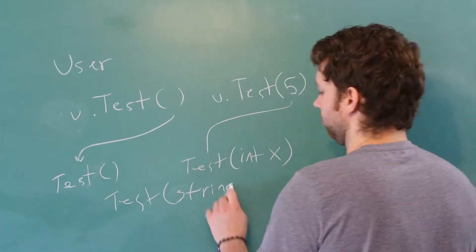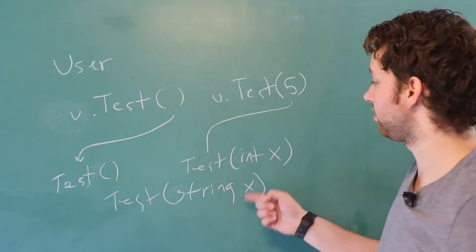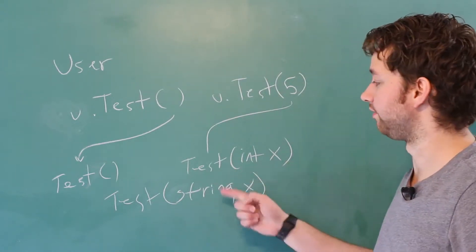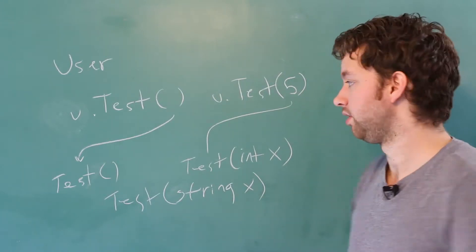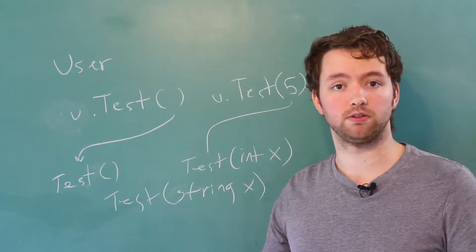We could have a third one in here where we actually have a string. It's still one parameter, but the types are different. So these three are all considered overloads. We have one test method with three overloads.